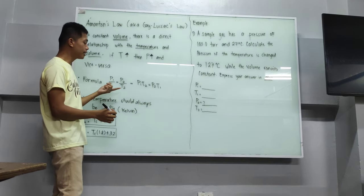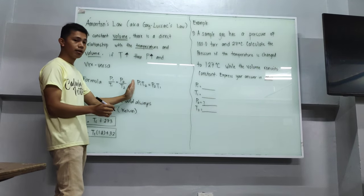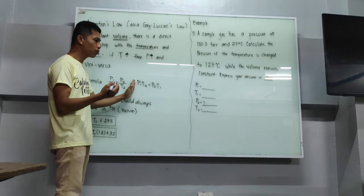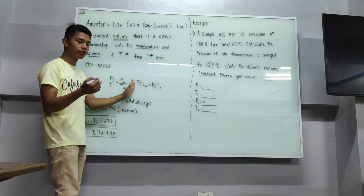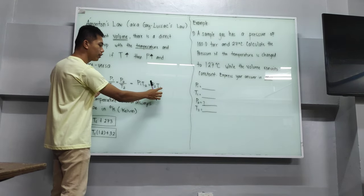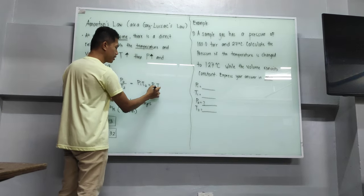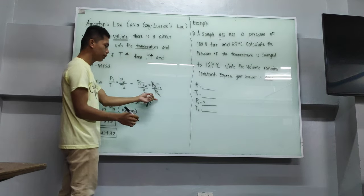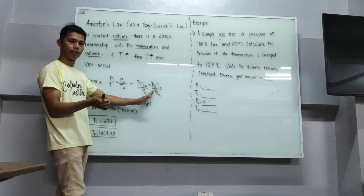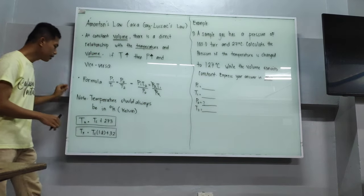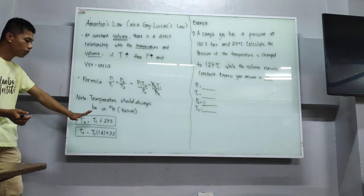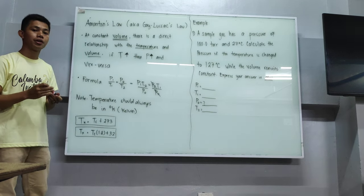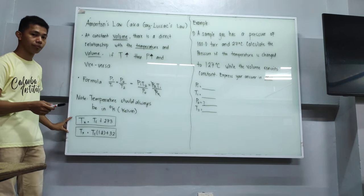Why use this new formula? By using this one, we can derive values in an easier way. For example, if we are trying to get the value of T1, we just divide both sides by P2. Therefore, this gives us our formula for T2, and similarly we derive the formula for T1.